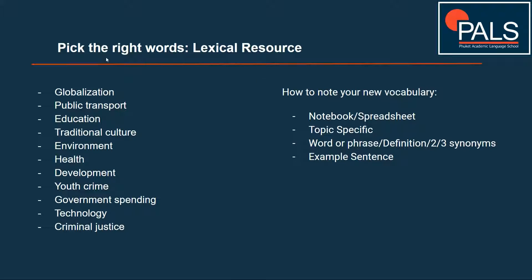On the left here, you can see the most common topics that come up in IELTS writing task 2. We have globalization, public transport, education, traditional culture, environment, health, development, youth crime, government spending, technology and criminal justice.